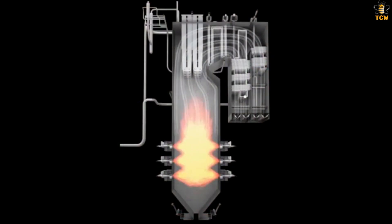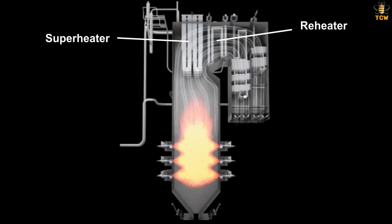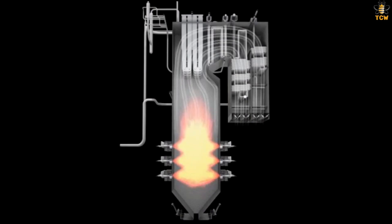The heating units in the boiler are units of pipes that contain feed water, consisting of a superheater, reheater, and economizer. The particulate-free flue gas flows first to the superheater, then to the reheater, and then to the economizer. The heat present in the flue gas is absorbed by the heating units so that the temperature becomes lower and lower. Meanwhile, the feed water in the heating unit pipes increases in temperature and becomes steam, which is then flowed to the turbine. The flue gas is then released through the chimney.